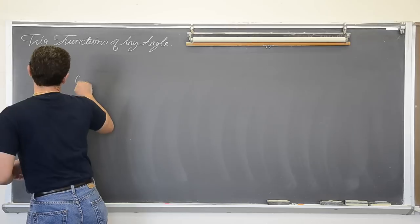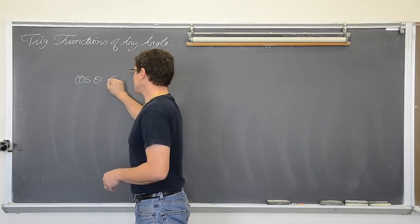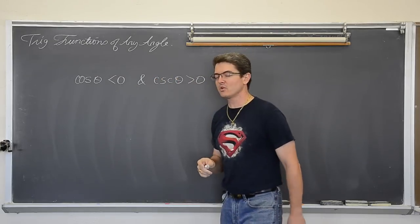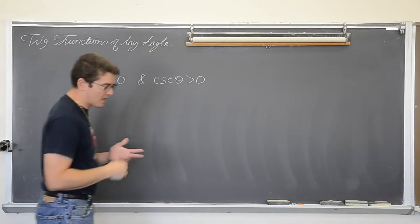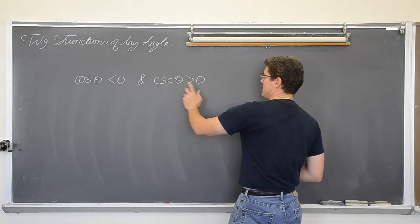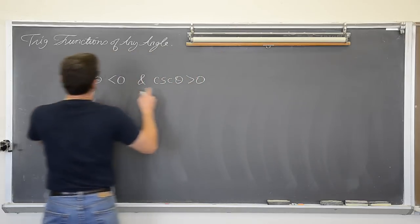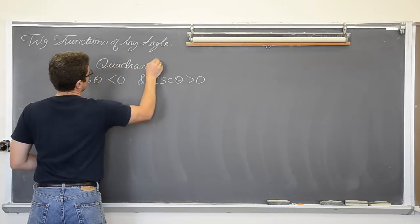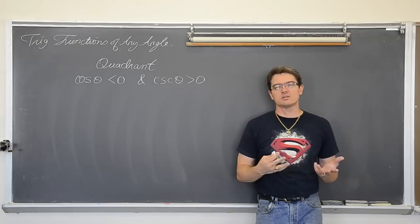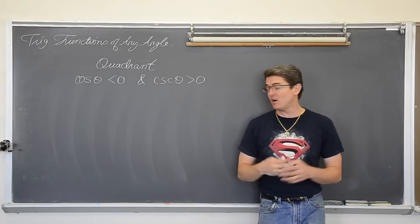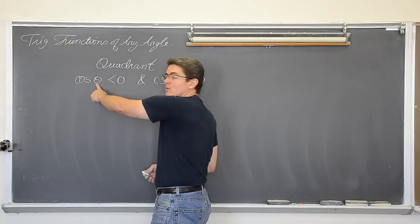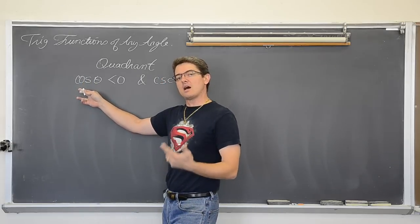What if I just tell you that the cosine of some particular angle is less than zero, and the cosecant of some particular angle is greater than zero? Could you tell me from just this little bit of information what quadrant the angle is in? We are not going to set up the six trig functions because I know nothing about the sides of the triangle — all I know is that cosine is negative and cosecant is positive.